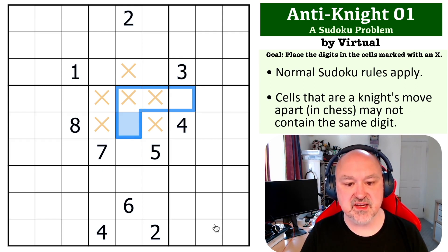Any cell that is a knight's move away, which is one in one direction and two in another, whichever way I draw that shape from that cell, you cannot have the same digit.